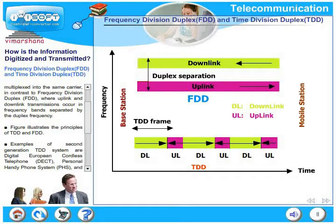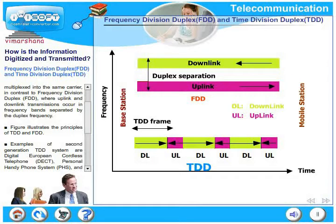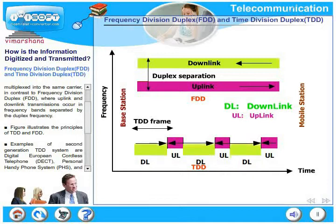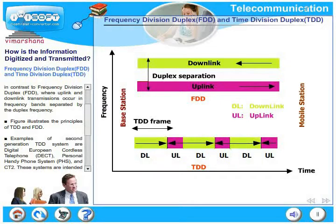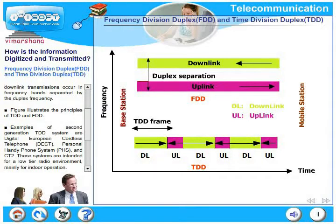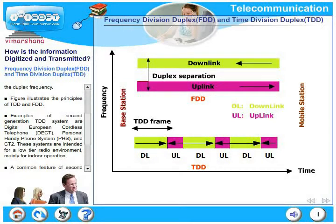In FDD, uplink is in a different frequency and downlink is in a different frequency. In time division duplex, the uplink is in a separate time slot and downlink is in a separate time slot, but the frequency is the same. The figure illustrates the principles of TDD and FDD clearly.